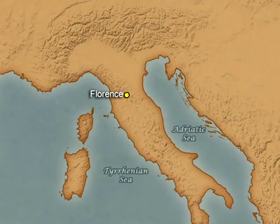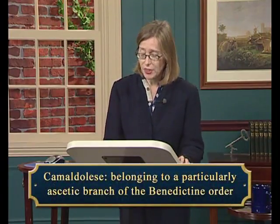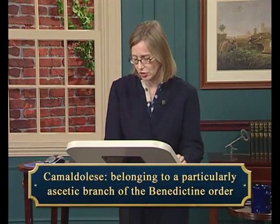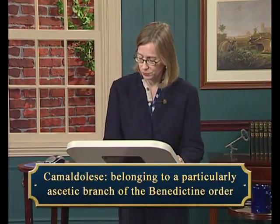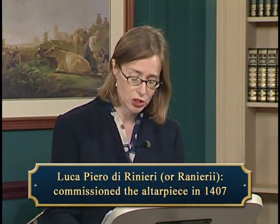The National Gallery's painting of the Coronation of the Virgin appears to have been made for the monastery of San Benedetto Fuori della Porta Pinti, also in Florence. Both monasteries were Camaldolese institutions — that is, they belonged to a particularly ascetic branch of the Benedictine order. San Benedetto was a new monastery, only founded in 1400. A document associated with the monastery indicates that the altarpiece was commissioned by a Florentine layman, Luca Piero di Ranieri, in 1407.